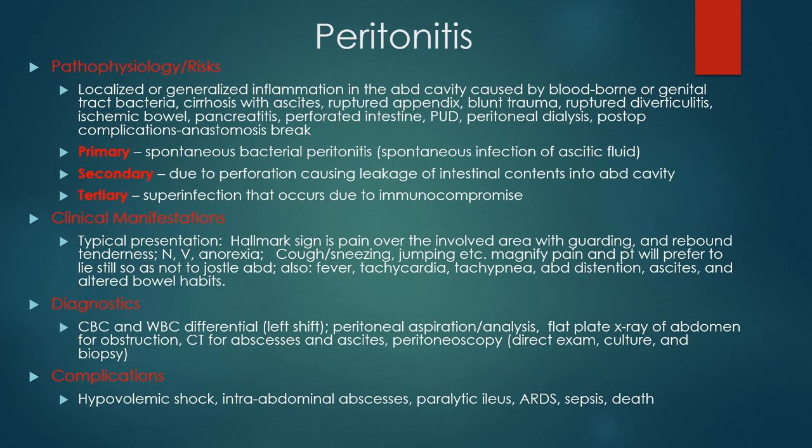Peritonitis is localized or generalized inflammation in the abdominal cavity that can happen for a number of different reasons. The most common cause is a bacterial infection. Peptic ulcer disease can cause perforation and lead to peritonitis because now you have all the contents within the bowel and stomach going into the peritoneum. Diverticulitis can perforate the sigmoid colon and become peritonitis. Other causes include a volvulus — a twist in the bowel — post-op complications, peritoneal dialysis, or blunt trauma.